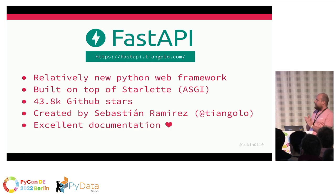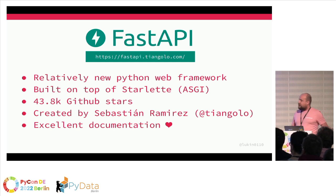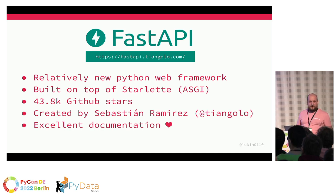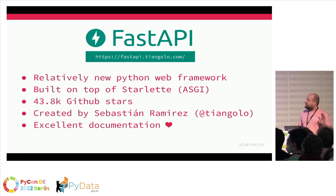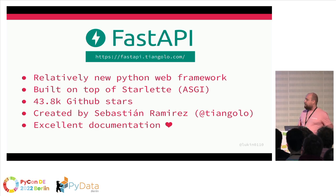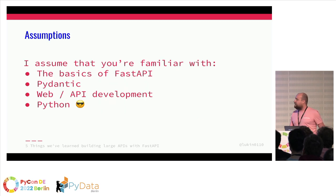We're going to talk about FastAPI. We use it all over the place at Investuite — we have a microservices architecture. FastAPI is a relatively new API framework built in Python, built on top of Starlette. It gained a lot of traction quickly. It's created by Sebastian Ramirez — I assume he's somewhere in the room. The documentation is brilliant; if you don't know Python yet, you can just start and it will work.